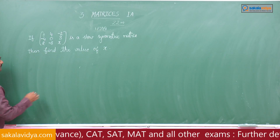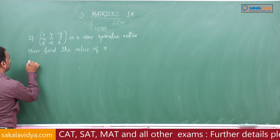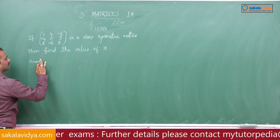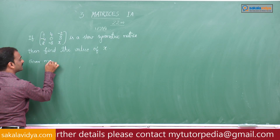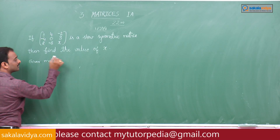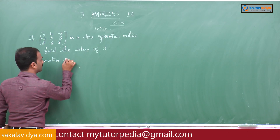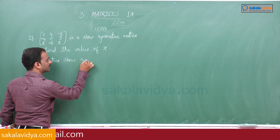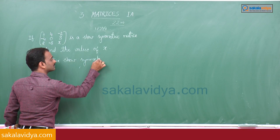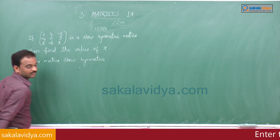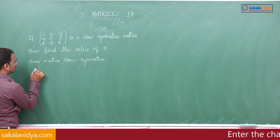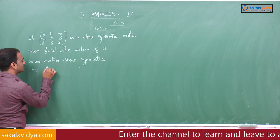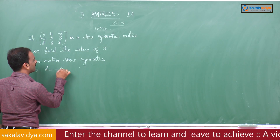Given that the matrix is skew symmetric. The condition for a skew symmetric matrix is: A transpose is equal to minus A.